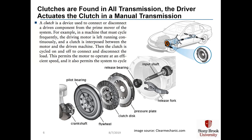The release fork is a device that pulls the pressure plate away from the clutch disc, which is done manually by pressing down on the clutch pedal in a manual transmission, or automatically in an automatic transmission. When the pressure plate is pulled away from the clutch disc, torque is not transmitted from the crankshaft to the input shaft.